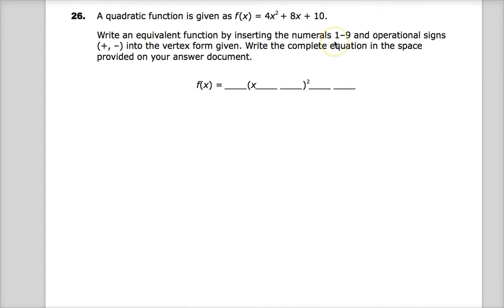Write an equivalent function by inserting numerals 1 through 9 in operational signs into the vertex form given. So basically, they want you to go from standard to vertex form. And there's a couple ways that you can do it.